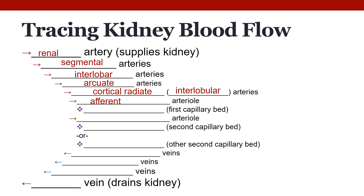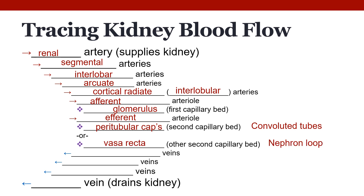From the cortical radiate arteries, blood moves to the afferent arteriole, which feeds the glomerulus — the first capillary bed encountered. Blood not part of the filtrate leaves through the efferent arteriole and then goes to either the peritubular capillaries surrounding the convoluted tubules, or the vasa recta surrounding the nephron loop. From there, it moves to the interlobular veins, then the arcuate veins, the interlobar veins, and eventually exits the kidney through the renal vein.